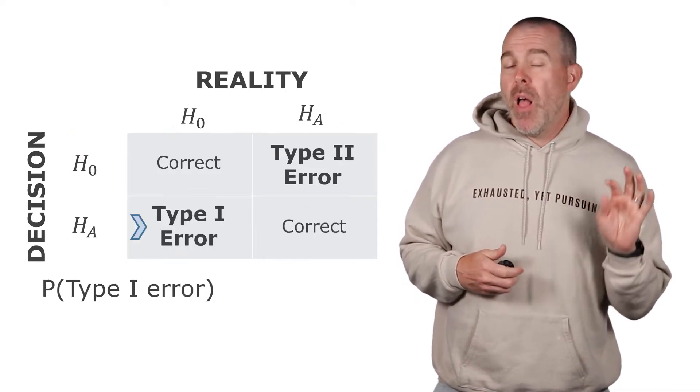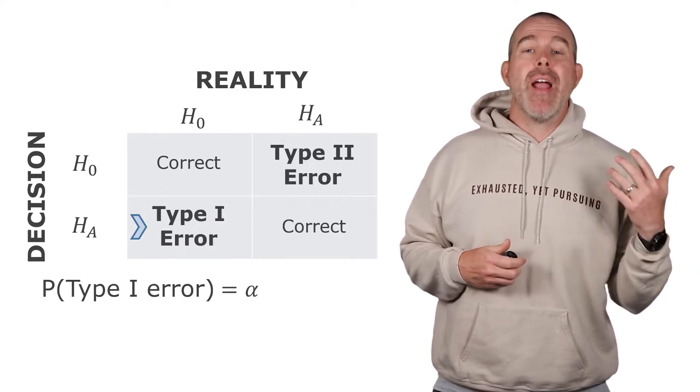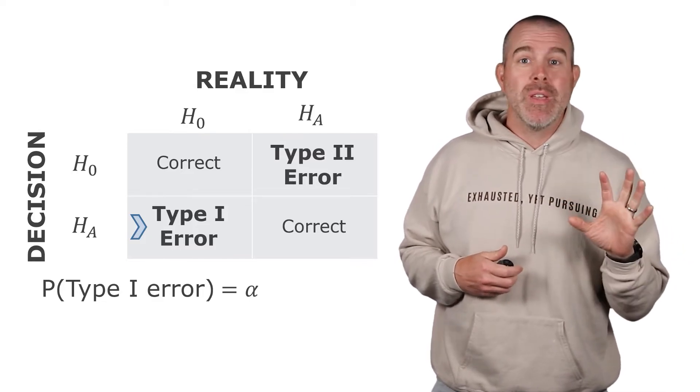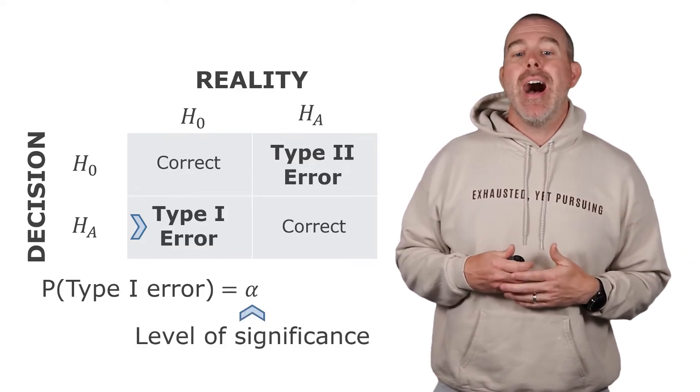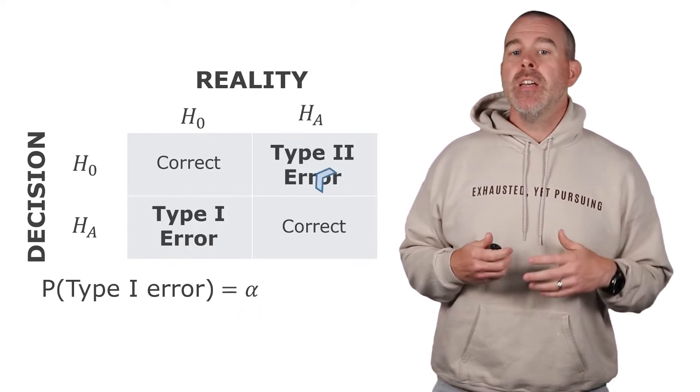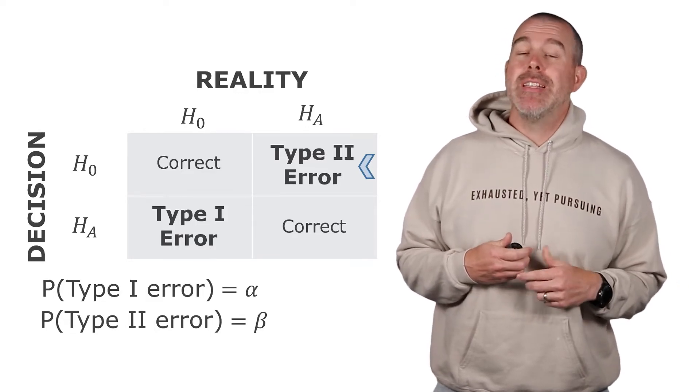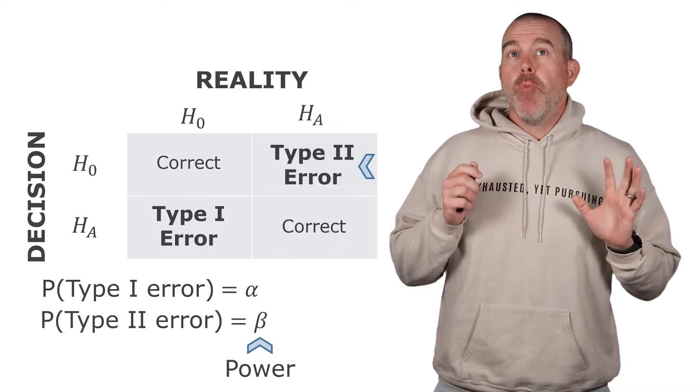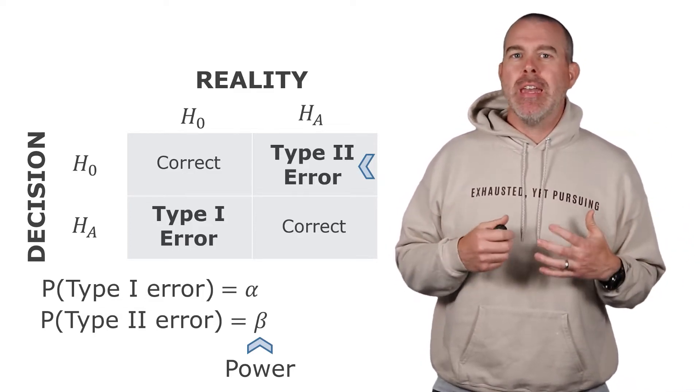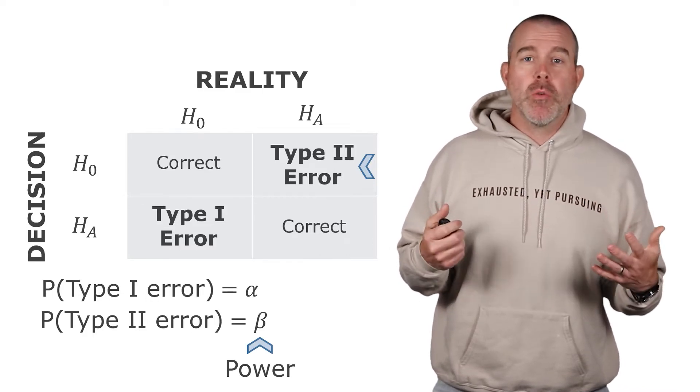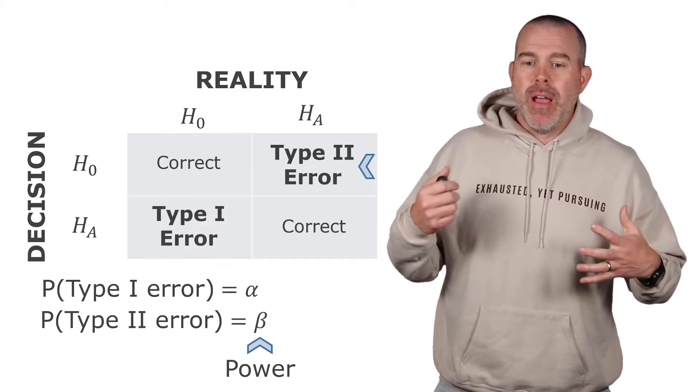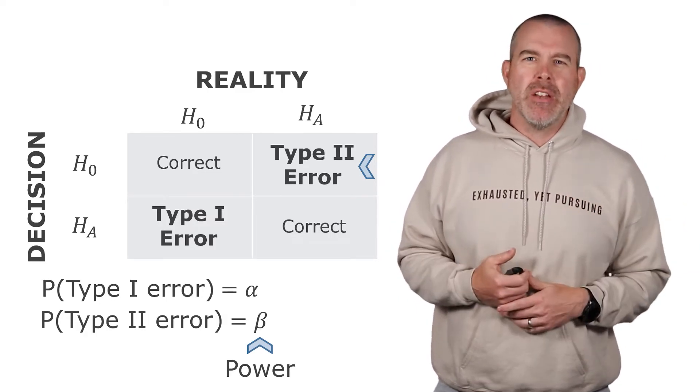More notation for you. The probability of a type one error, we use the letter alpha for that. You might recognize that from our confidence intervals in our z sub alpha - there is a reason for that. That's also called the level of significance of the test. For the type two error, probability is beta, that's the power of the test. We're not going to talk a lot about that one in this class, that requires a little more sophistication. That's something if you want to learn more about, you can investigate on your own.